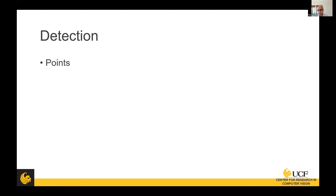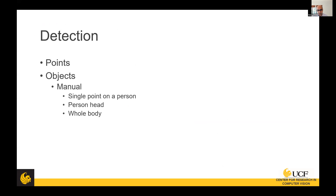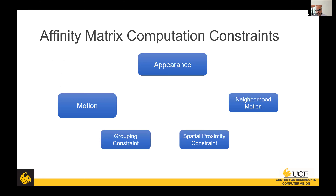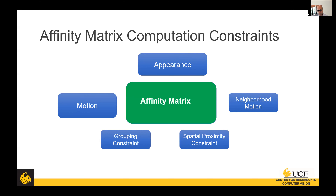Data association involves feature extraction, then affinity matrix computation, and then optimization. In the old days, we used to do detection of points or objects — mainly manual detection, a single point on a person's head, body, or joints. But then automatic methods came in: DPM, YOLO, and heatmap-based methods. Features were also handcrafted, like intensity, gradients, histograms, bag of words, and so on. The main focus was on how to compute the affinity matrix using appearance, motion, and grouping constraints.